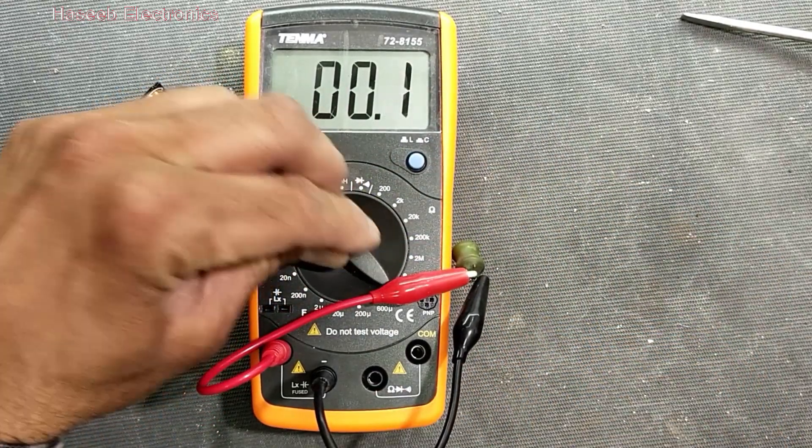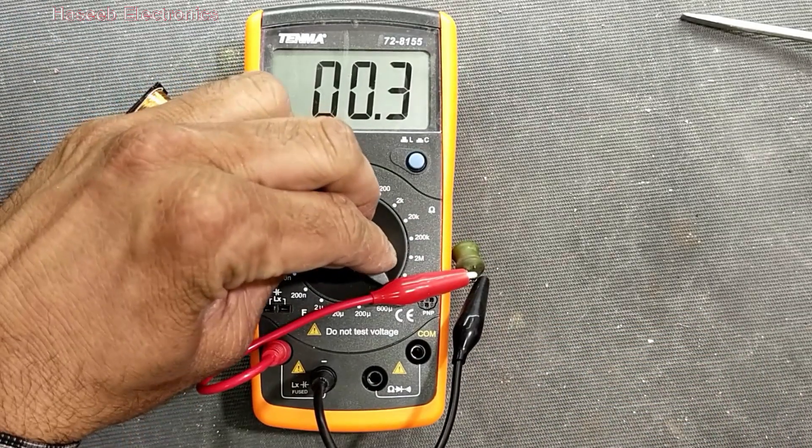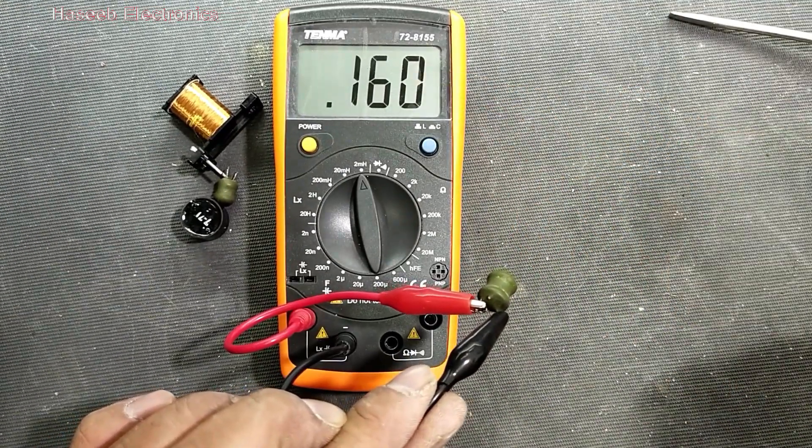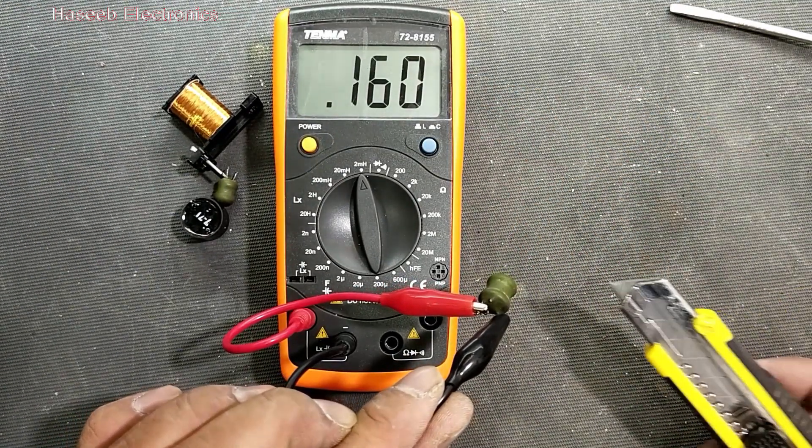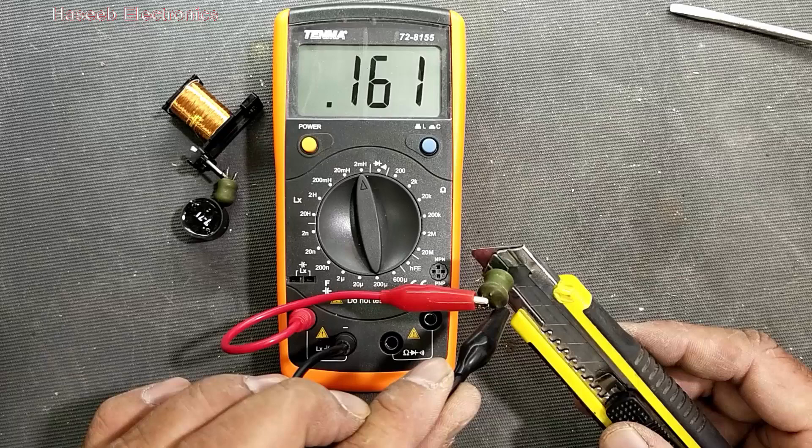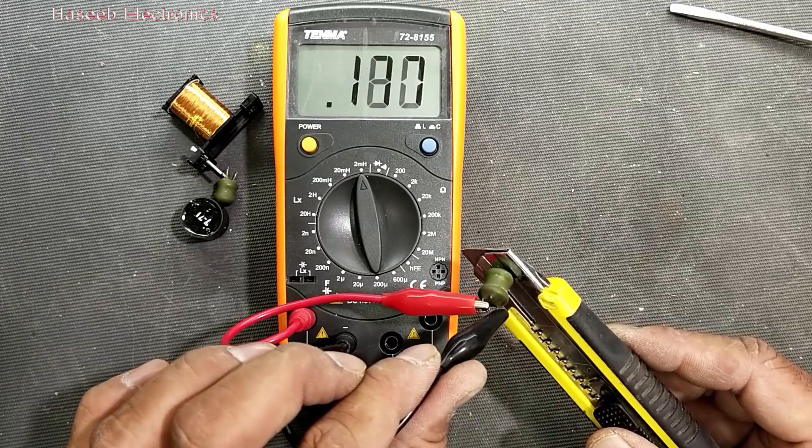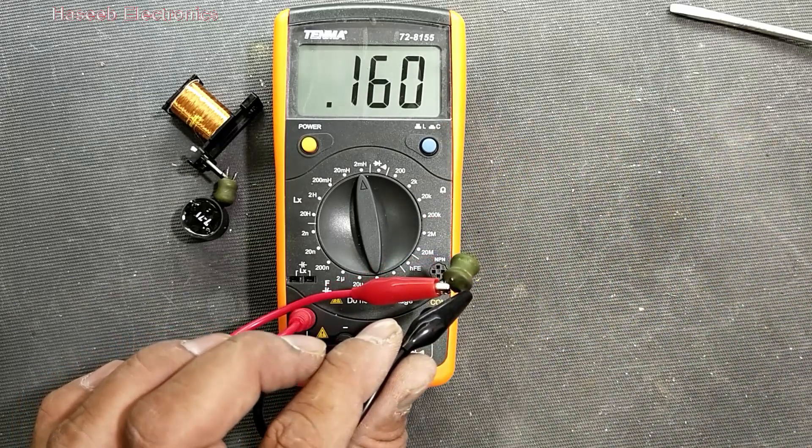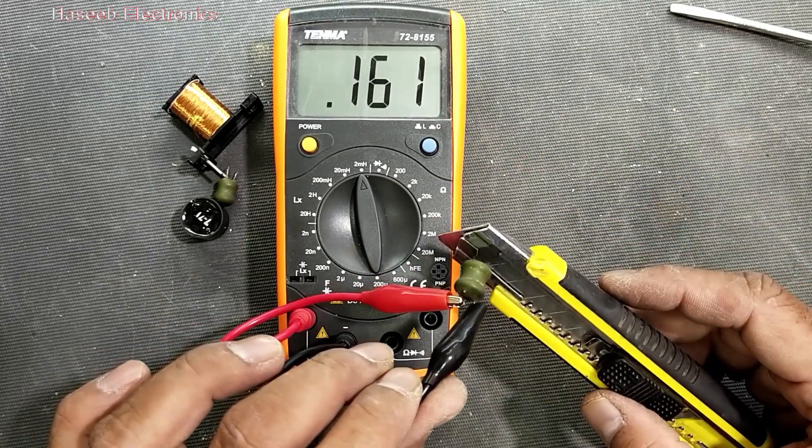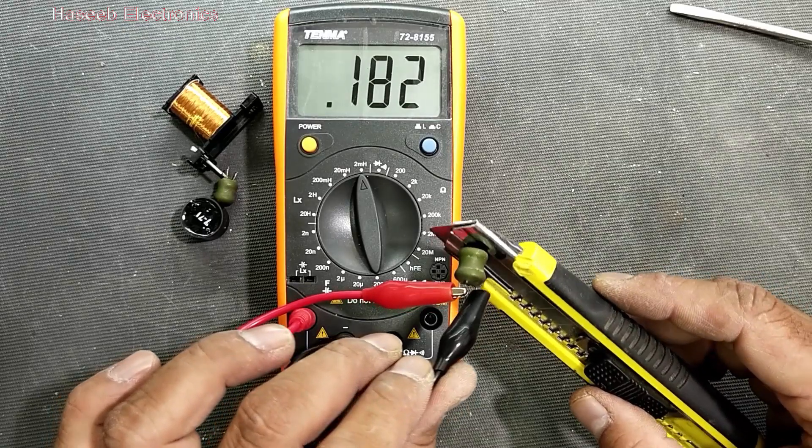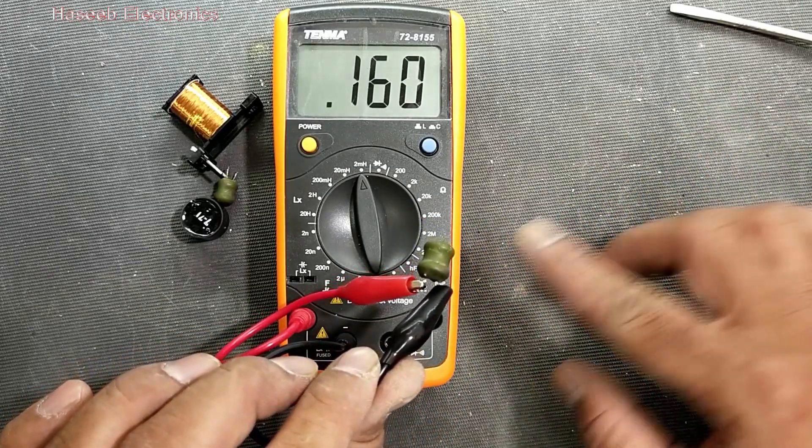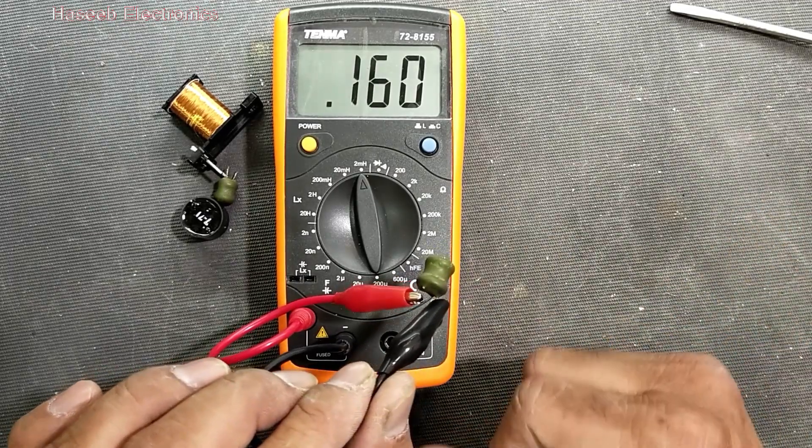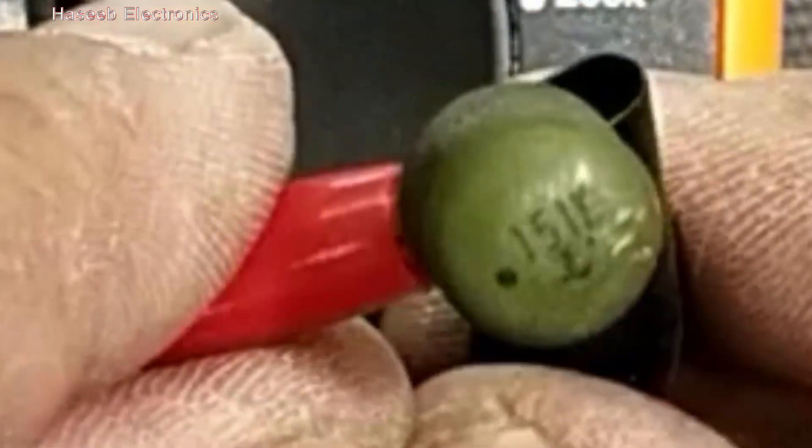And here we can set the manual range switch to a position where we can get a good reading. Point 160. And we have to remember one thing - it should not be close to any metallic part. If it is close to this metal part, its reading will be different, its reading will not be good. So for best reading it should be away from any metallic part, from any ferrite material, from any iron material.